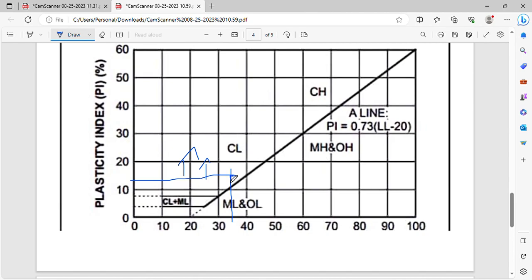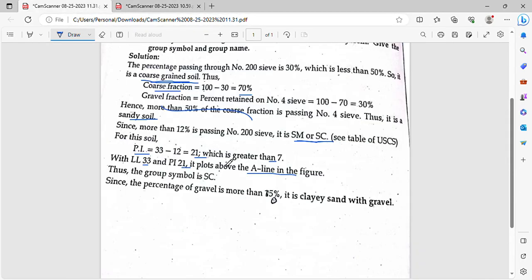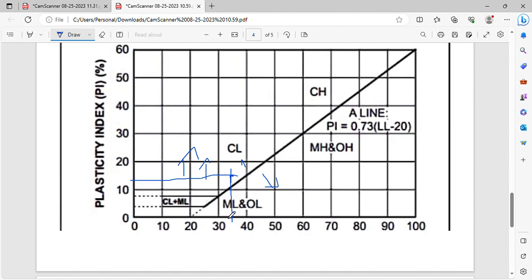Liquid limit is 33. If we plot this point and compare it to the A-line, we find it plots above the A-line. This indicates sand with clay, SC.